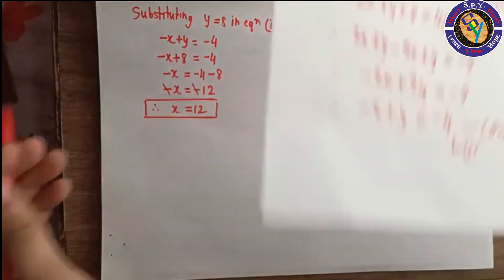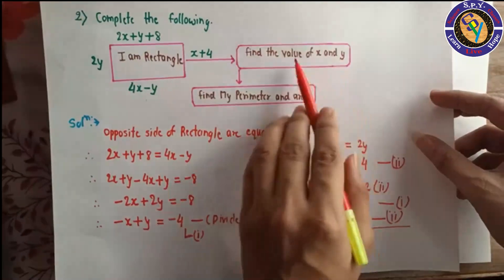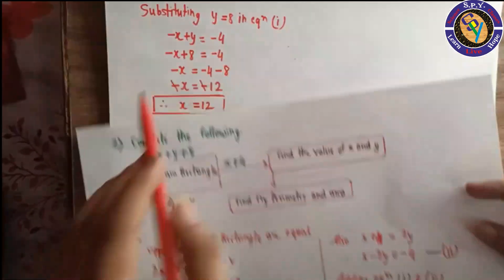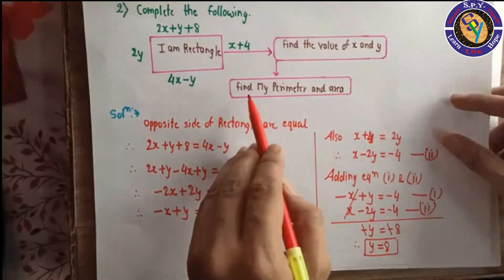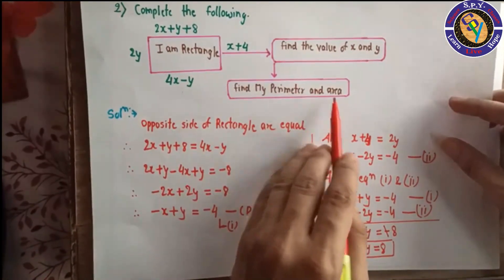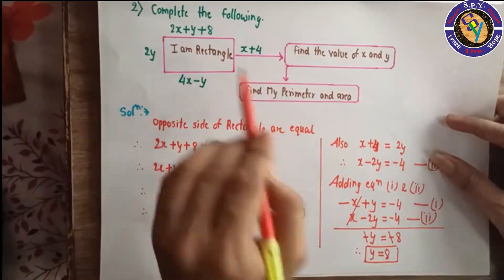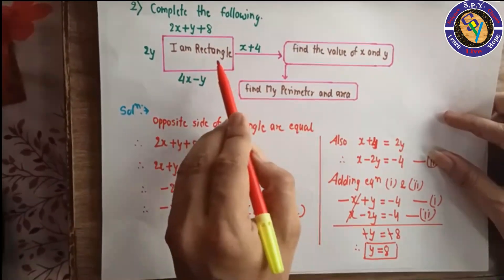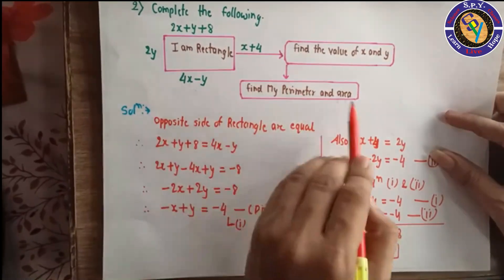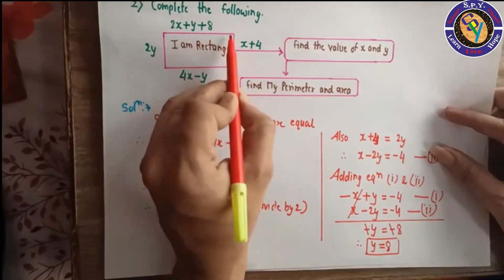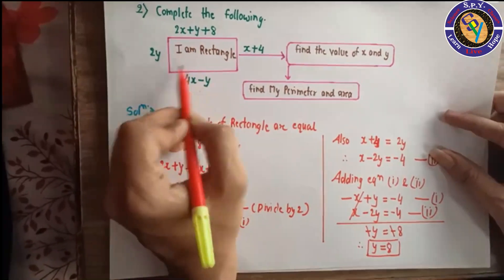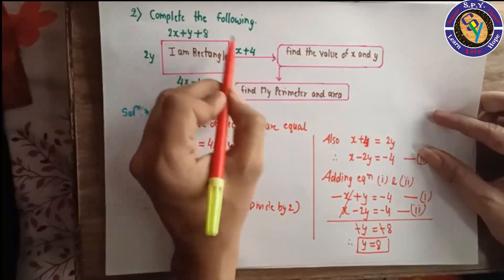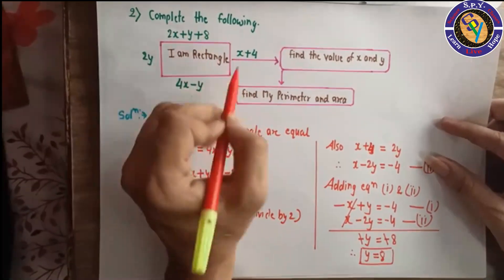So x equals 12 and y equals 8. Now we find the perimeter and area of the rectangle. The area of a rectangle is length into breadth, and the perimeter is 2 times the bracket of length plus breadth.